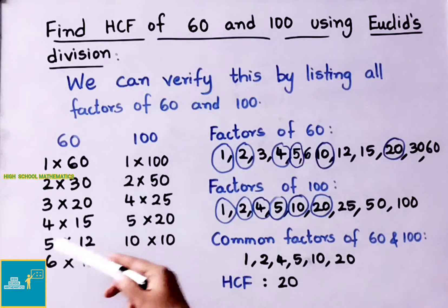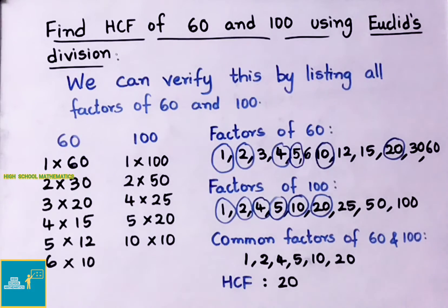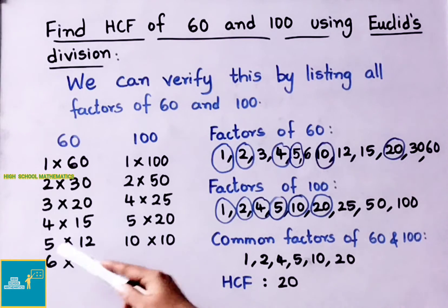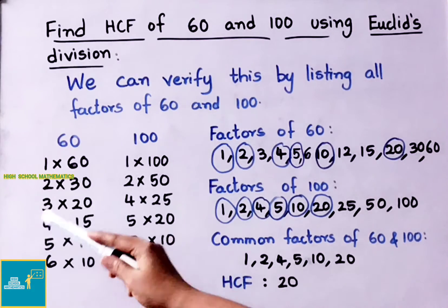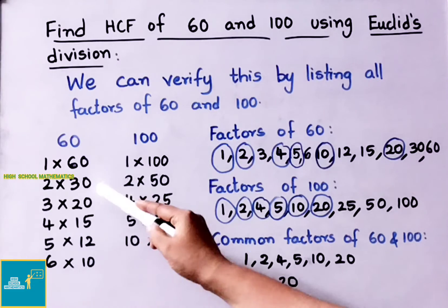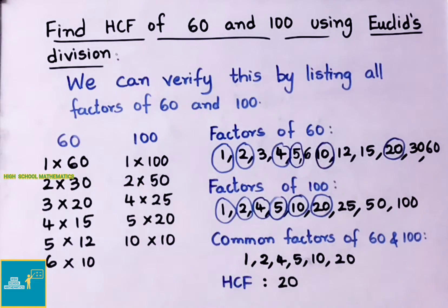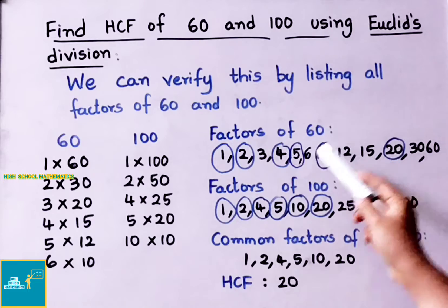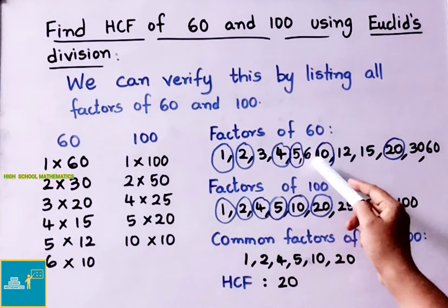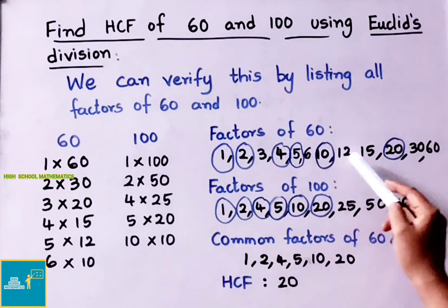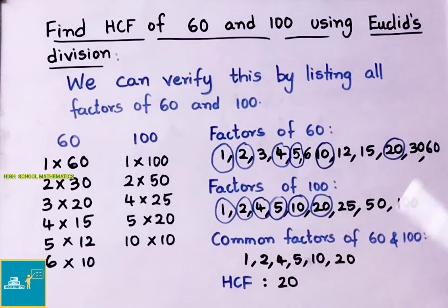Continuing: 5×12, 6×10 — all equal 60. So the factors of 60 are: 1, 2, 3, 4, 5, 6, 10, 12, 15, 20, 30, and 60.